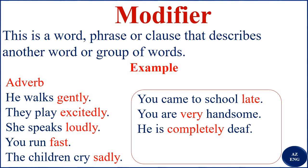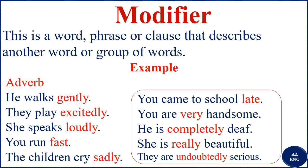'He is completely deaf' — 'deaf' is an adjective, and 'completely' is an adverb that modifies the adjective 'deaf.' 'She is really beautiful' — 'really' is our modifier; it describes 'beautiful.' 'They are undoubtedly serious' — 'undoubtedly' is our modifier; it modifies the adjective 'serious.'